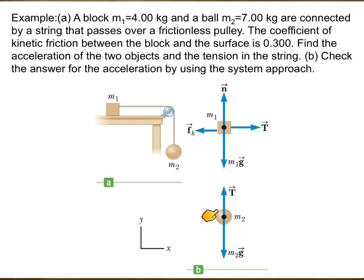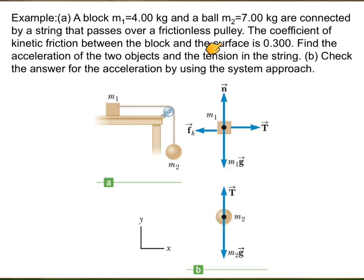For mass M2, there are only two forces: the tension in the cord acting upward, and the weight M2·g acting downward. The masses are given, the kinetic friction is given, and the problem asks us to find the acceleration and the tension in the string.